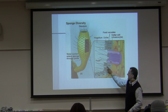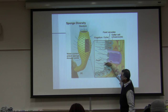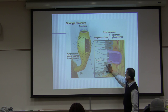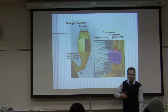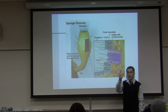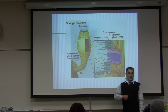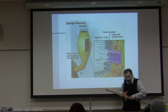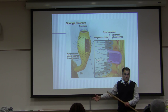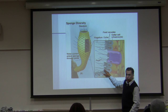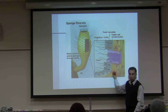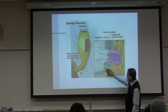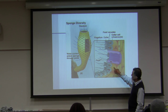Water goes in and gets trapped by choanocytes, which have flagella and microvilli. This is similar to our digestive system — the simple columnar epithelial tissue with a brush border or microvilli to absorb food and nutrients. Choanocytes absorb food and nutrient, then give it to amoebocytes. Amoebocytes make spicules and maintain the animal.